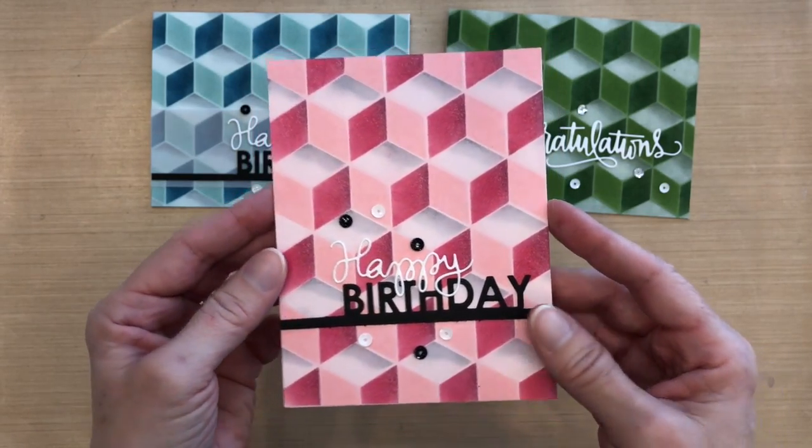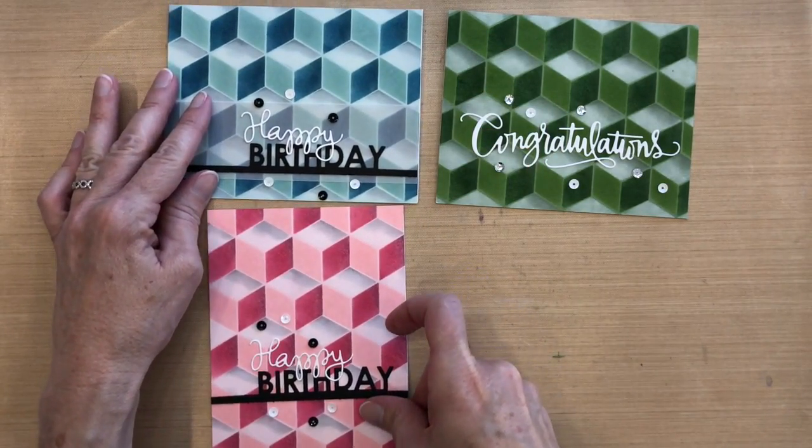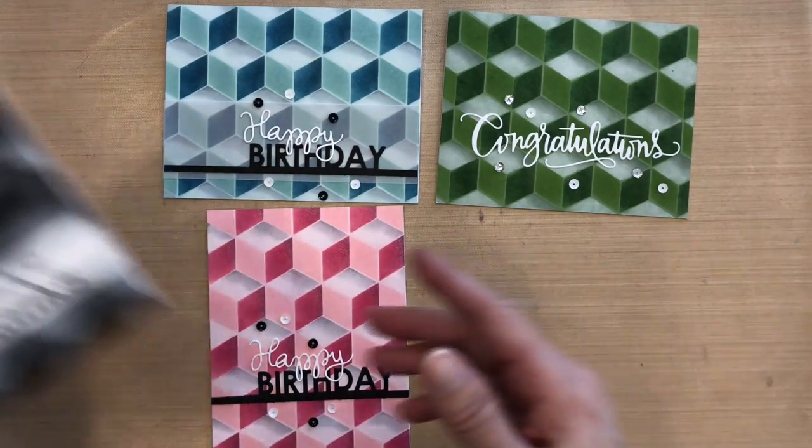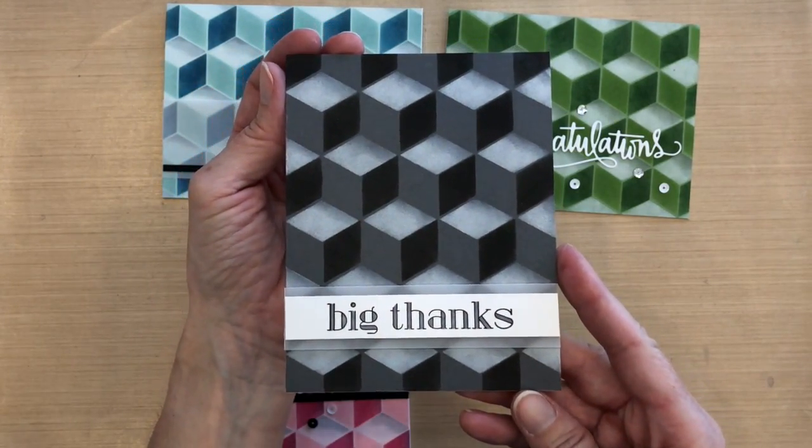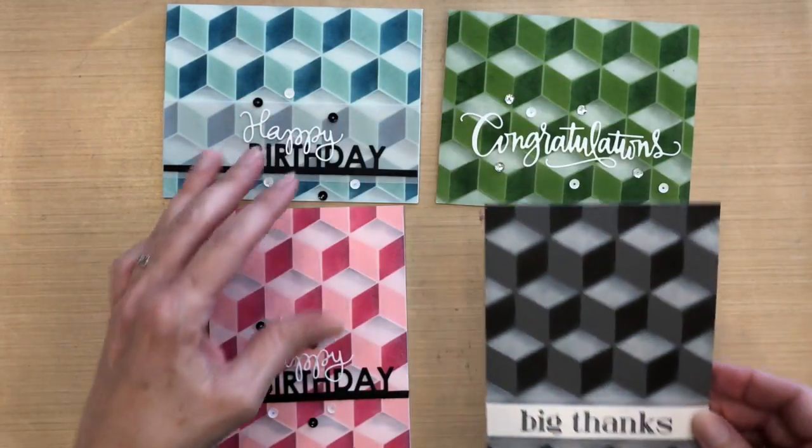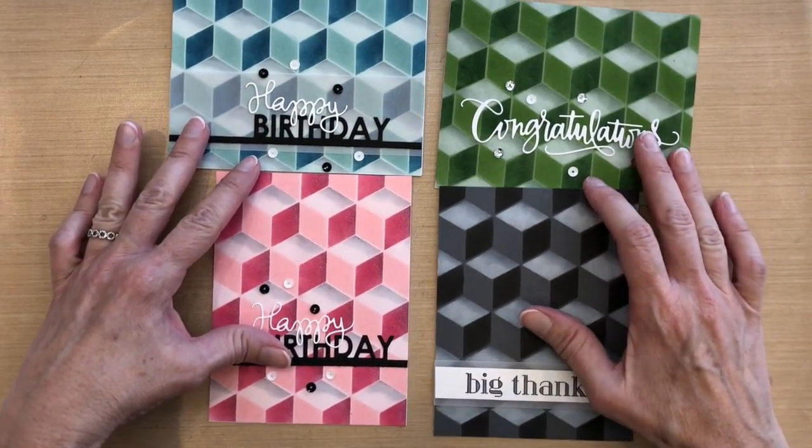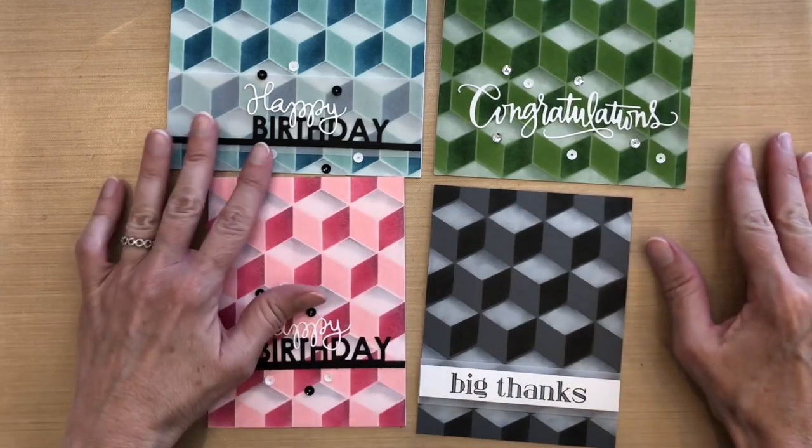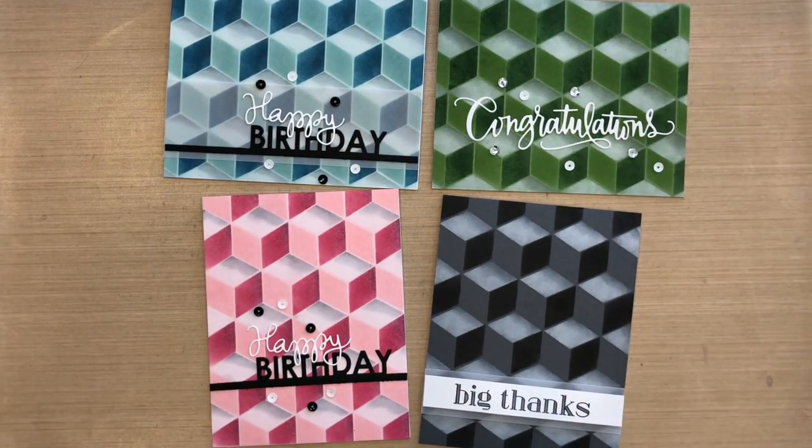I also did a pink one. This is Pink Pirouette with the Pink Pirouette ink and the Rose Red and the white, and I also used that same happy and birthday but without vellum. And then finally is the gray and black and white, so it actually is Basic Gray cardstock and I used Black Soot ink and white. So I only colored the two sides on that one, and then I added a sentiment strip on top of some vellum.